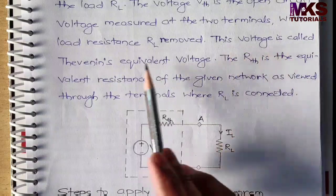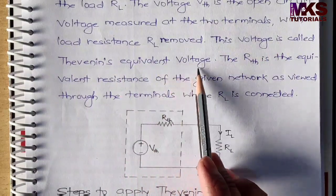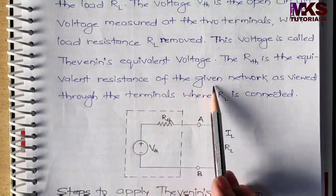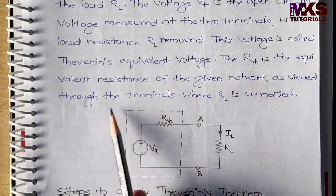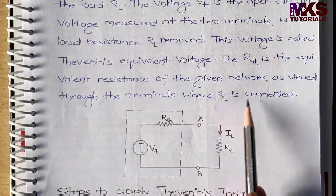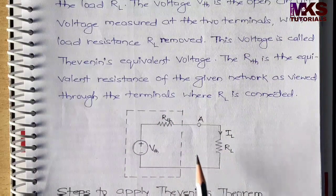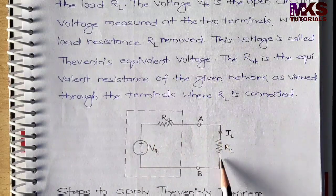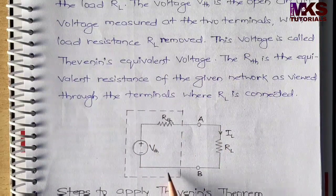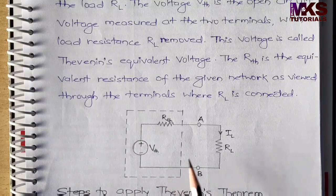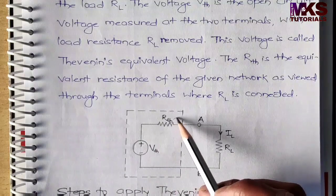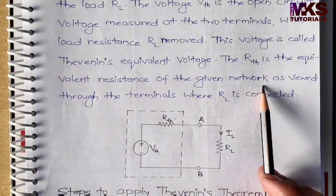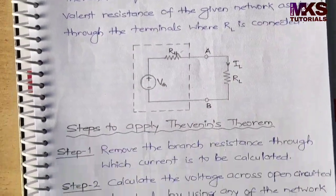This voltage is called Thevenin's equivalent voltage. The RTH is the equivalent resistance of the given network as viewed through the terminals where RL is connected. जब RTH निकालूँगा, मतलब मैं इसको short करके total इस circuit में मौजूद equivalent resistance को find कर दूँगा जो मेरा equivalent resistance of the given network है।